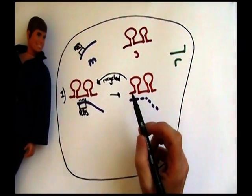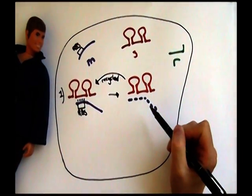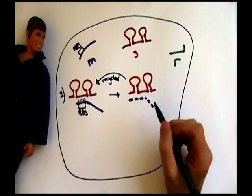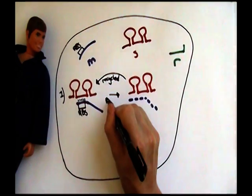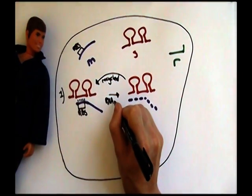This mechanism by which the messenger RNA is degraded is catalyzed by an enzyme called RNase E, and something which is not completely understood yet.